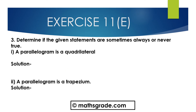Now question number 3: determine if the given statements are sometimes, always, or never true. Part A: a parallelogram is a quadrilateral — a parallelogram is always a quadrilateral, so the answer is always. Part B: a parallelogram is a trapezium — a parallelogram can never be a trapezium, so this is never.